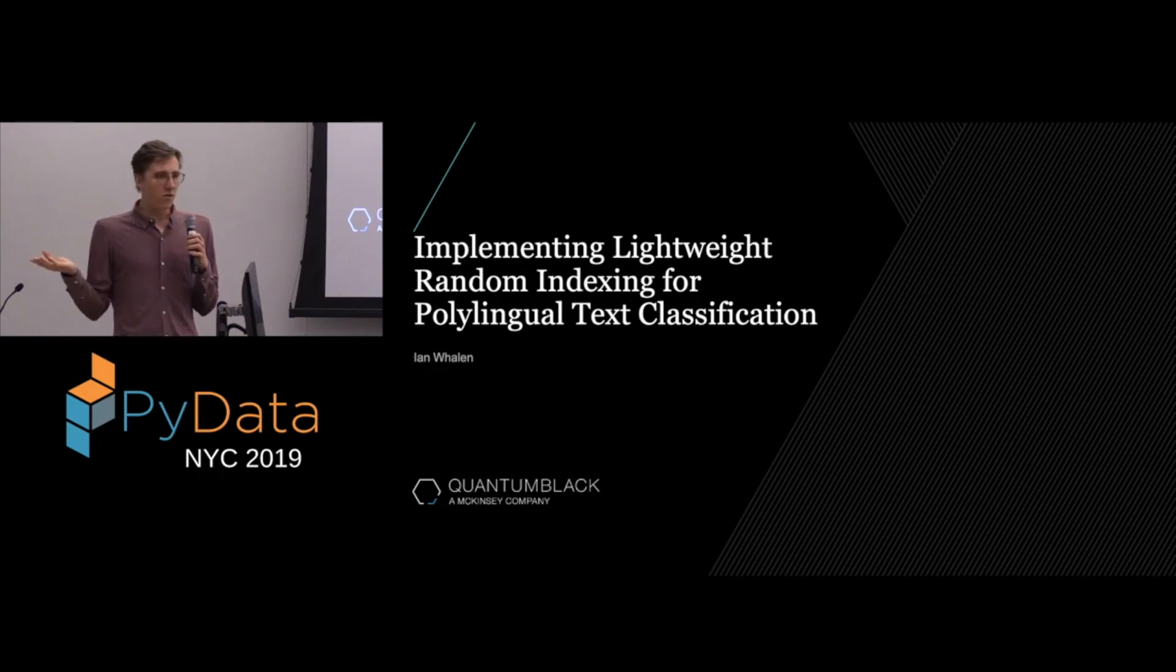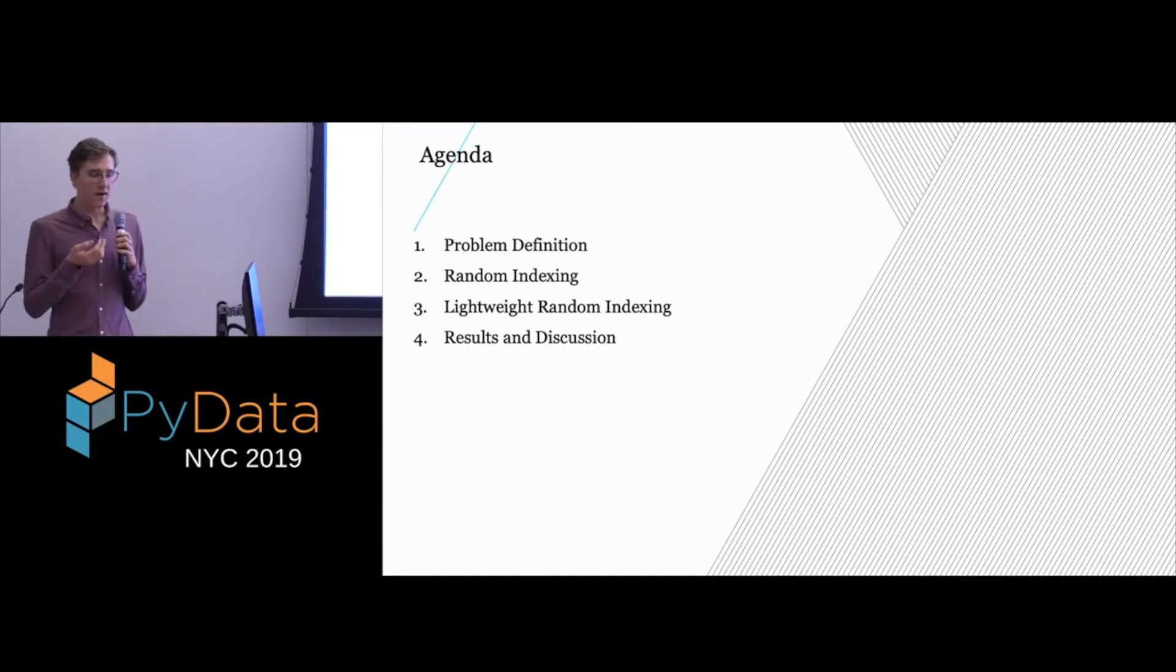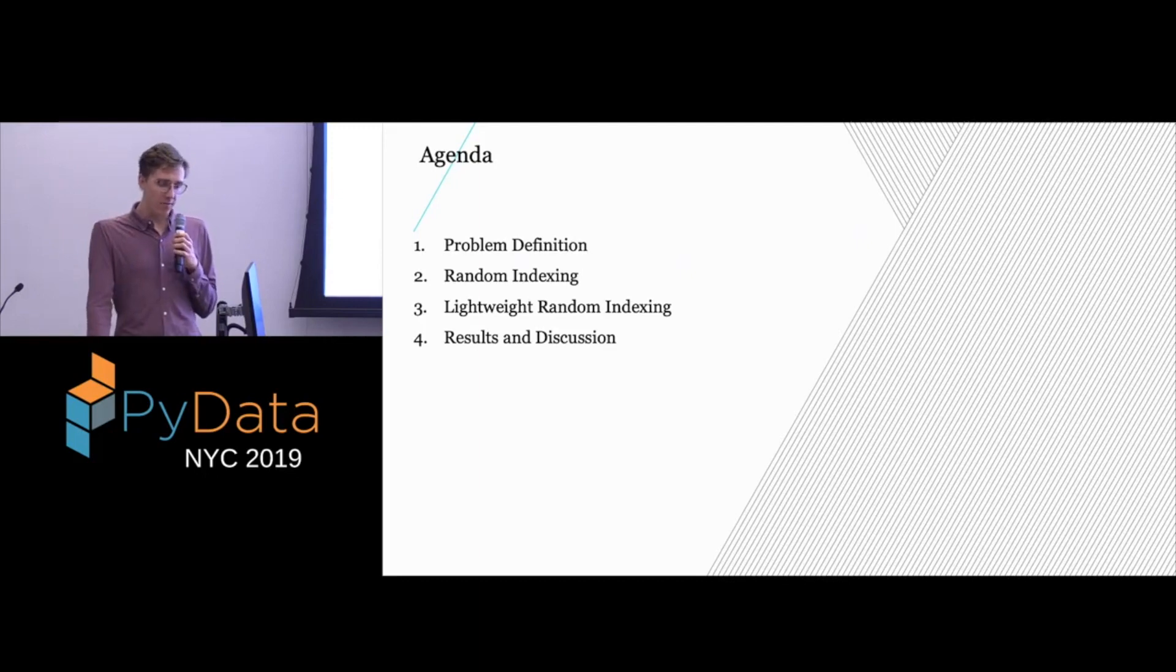We'll go over some high-level code examples that may be oversimplified, but you'll get to see what the method looks like at a really small scale. Here's our agenda. We'll go over what text classification is, see what the vanilla version of random indexing is, and we'll also talk about random projections and how it differs from those. Then we'll look at lightweight random indexing and see the results from the paper.